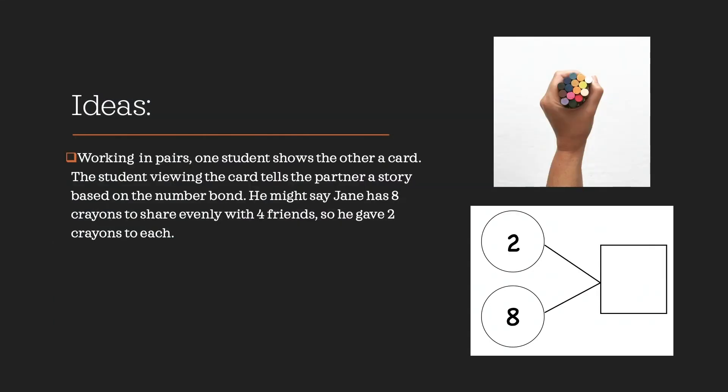Another idea is you could work with pairs. One student could show the card, and the student viewing could tell a story that goes with that partner based on the number bond that they're seeing. So they could do it again for multiplication or division. In this case, it's a division sentence. But he might say Jane has nine crayons to share evenly with four friends. So he gave two crayons to each friend. You also could look at that in another way by getting kids to come up with a different story that might match the card that you might be working with.